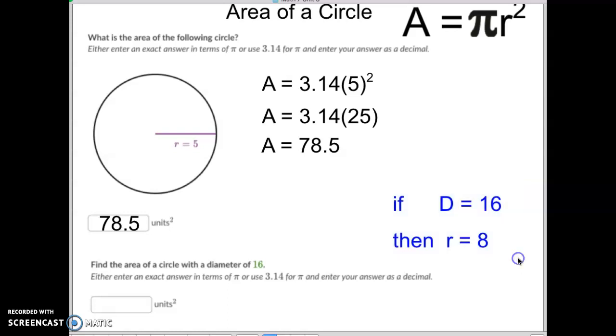Once you know that, you're going to plug into our formula, area equals pi r squared. We'll do that right down here. The area equals pi times the radius of 8 squared. 8 squared, 8 times 8, is 64. So we're going to take pi times 64, and 3.14 times 64 is 200.96.